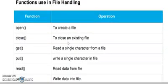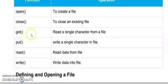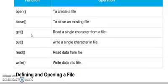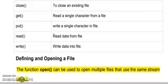Let's look at the functions of file handling. The first is open — open is used to create or open a file. Then close. Then get, which reads a single character. Put, which writes a single character. And read and write, which are for reading from the file and writing to the file.